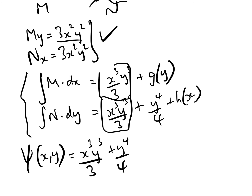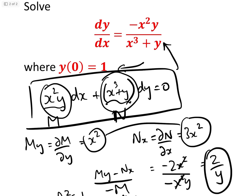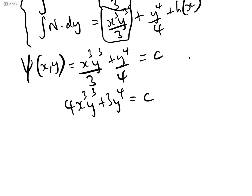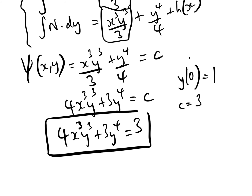And basically we know that equals a constant. So we can write 4x³y³ + 3y⁴ = C, multiplying everything by 12. Our initial condition was y(0) = 1, so when x = 0, y = 1, therefore C = 3. So the answer to our differential equation is 4x³y³ + 3y⁴ = 3. That is the implicit solution to the equation.